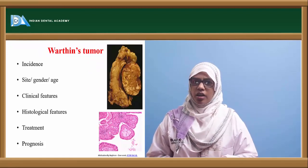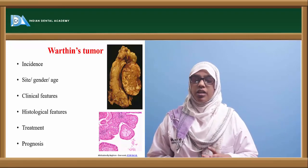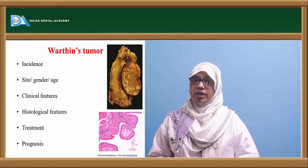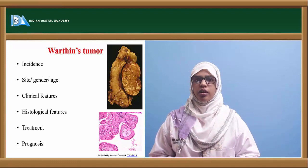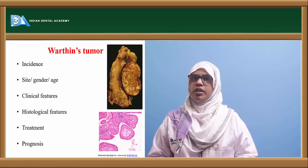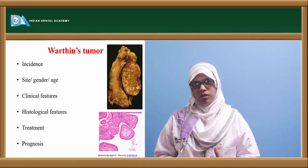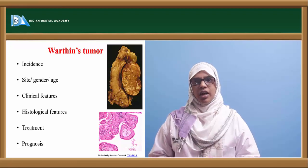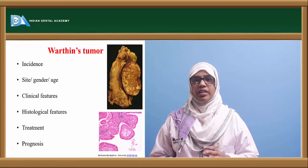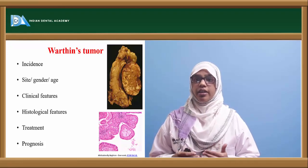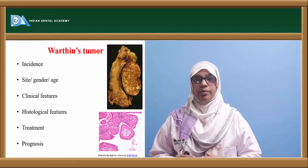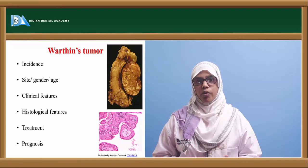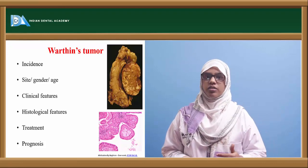The next is Warthin's tumour. It accounts for around 3 to 10% of salivary gland tumours. It is more commonly seen in the parotid region and very rarely in the minor salivary glands. Males are more commonly affected, around 30 to 40 years of age. Clinically it also appears as a swelling in the parotid region, and most of the time Warthin's tumour can be bilateral. The swelling is firm in consistency and not fixed to adjacent structures. Histologically the cells are lined in bilayer. Treatment is surgical excision and prognosis is comparatively better than pleomorphic adenoma.